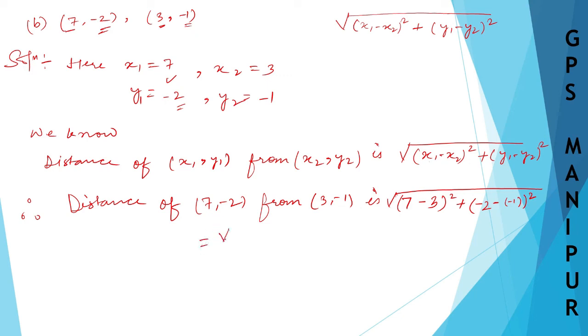which will be root over 7 minus 3, it is 4 square plus minus 2 minus minus 1, it is minus 1 square. So 1 square, same thing.